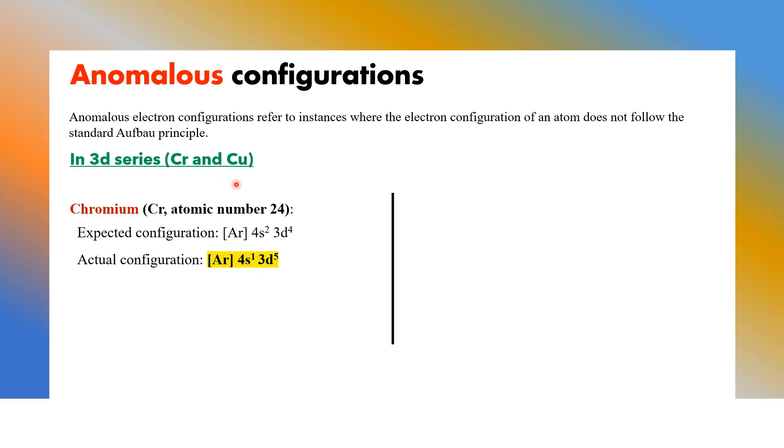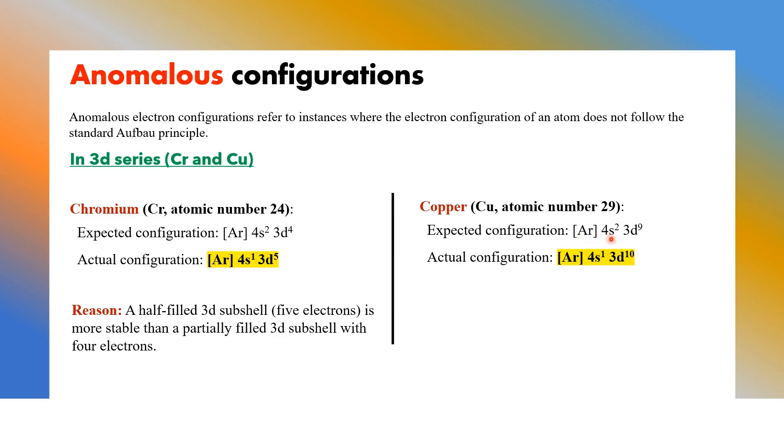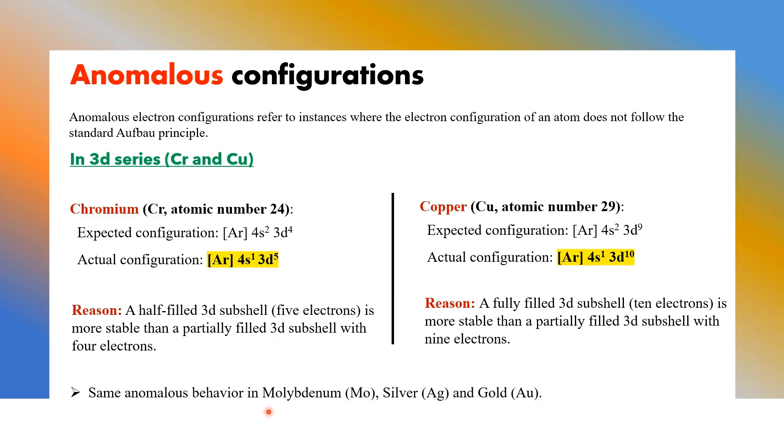And next one is copper. Copper is atomic number 29. So argon 4s2 3d9. So 3d9, D shell, subshell, taking one electron from s subshell to become 3d10, 4s1. This is more stable configuration. The reason to become this anomalous configuration behavior is half filled 3d subshells and fully or completely filled D subshells, D5 and D10 are more stable than partially filled D subshells.